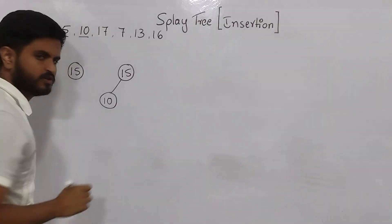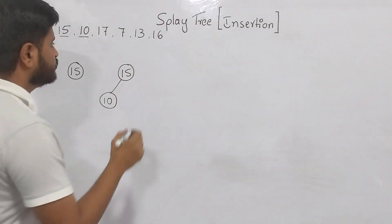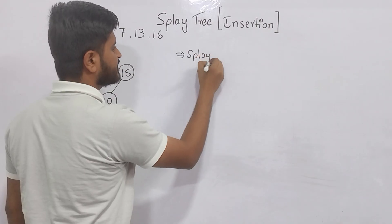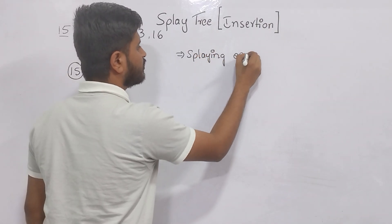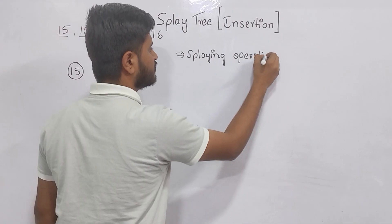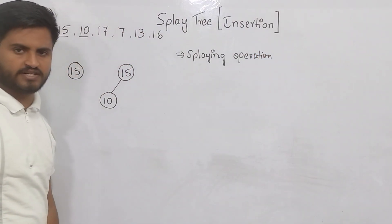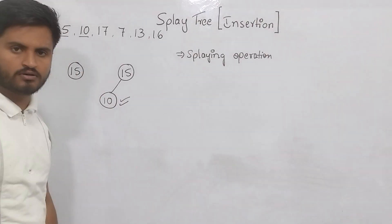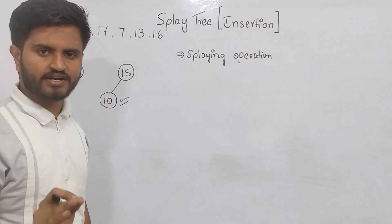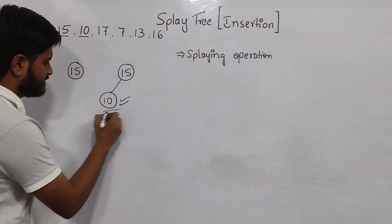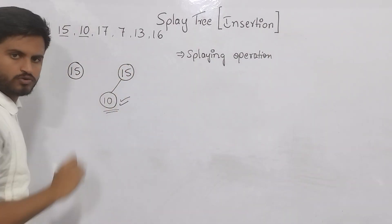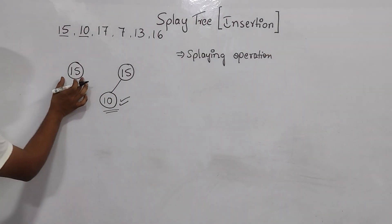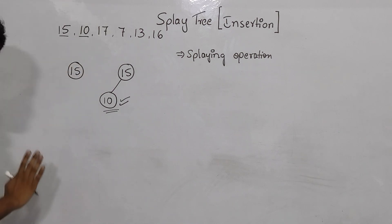So 10 will be here. Now, in Splay tree insertion, there is a concept called the Splaying Operation. What this Splaying Operation means is: make the node that you inserted as the root node. I inserted 10, so I must make 10 the root node. With only one element before, it was already the root. Now we have two elements.